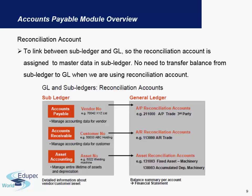Next we have the reconciliation account, which we briefly covered in the overview. The reconciliation account is a link between the subledger and the GL. It is assigned to master data in the subledger. The vendor master data has a reconciliation account assigned to it, and this reconciliation account is a common GL account that can combine a number of vendors — meaning it is not a one-to-one relationship; multiple vendors can be assigned to one reconciliation account.